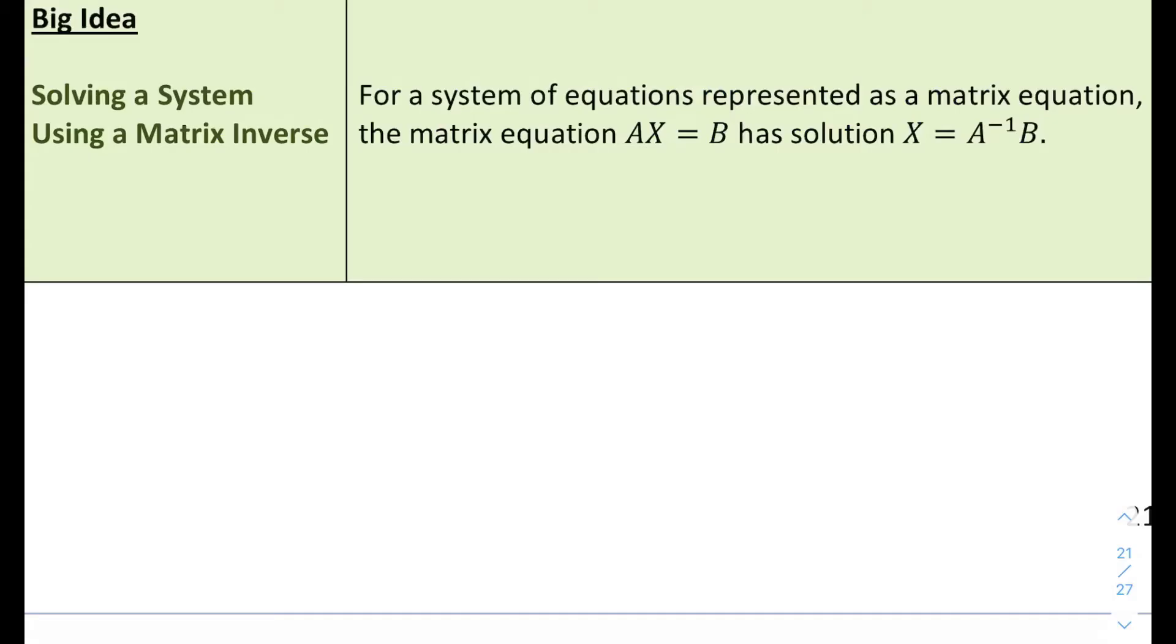How does that help us solve a system of equations? Okay, so if you think about solving any old equation, say you have 4x equals 1, you could multiply both sides by the inverse, multiplicative inverse of 4, which is 1 fourth, to get x by itself. So you'd end up with x equals 1 fourth.